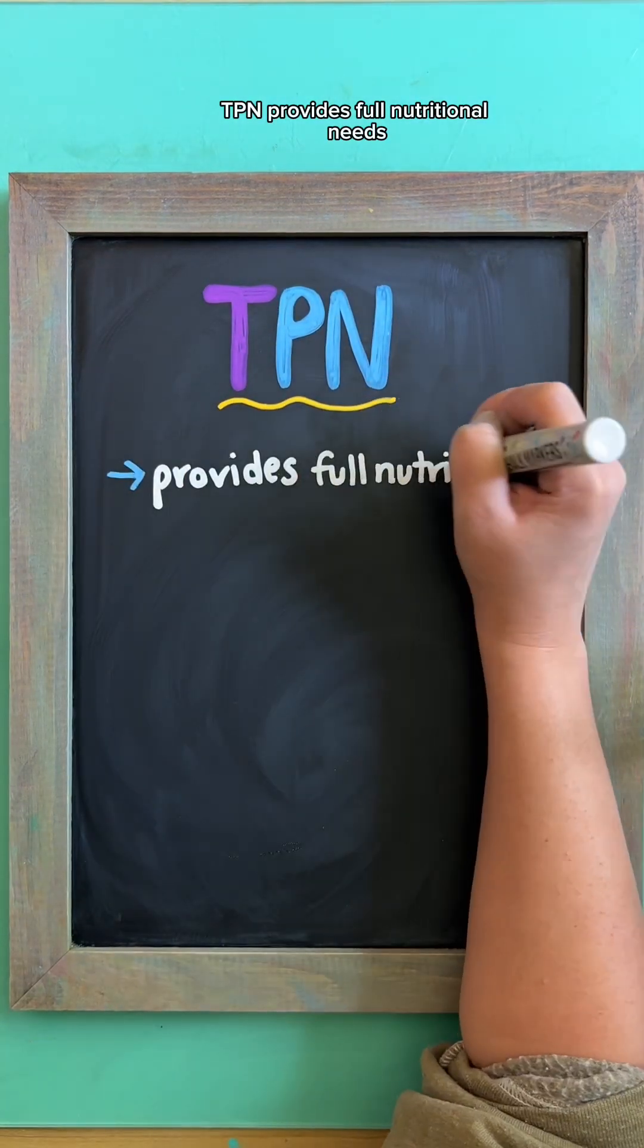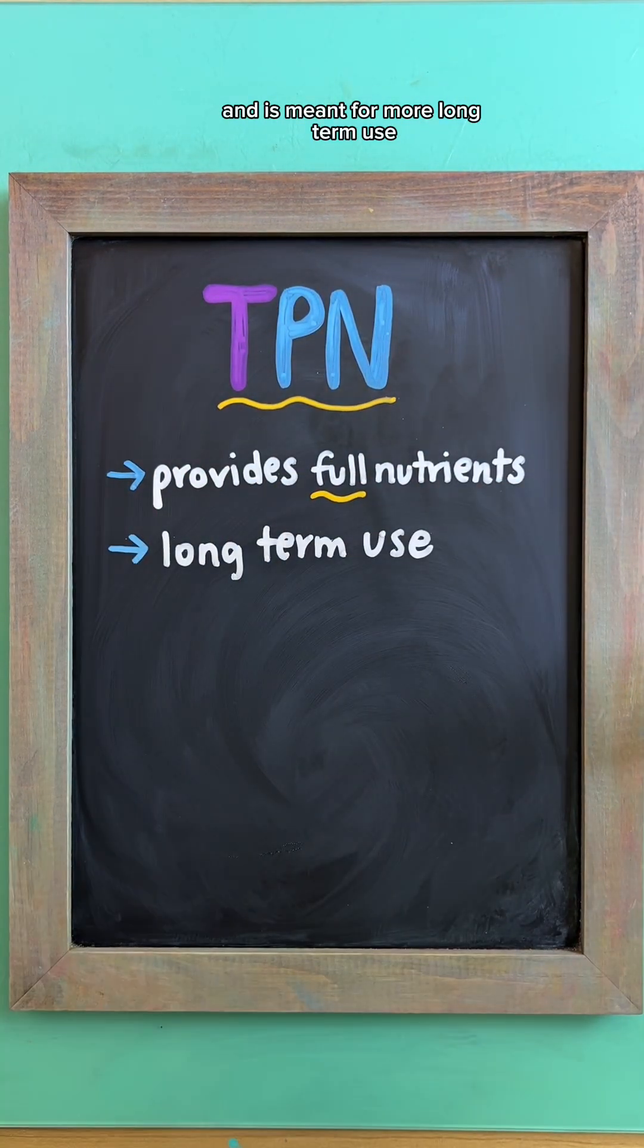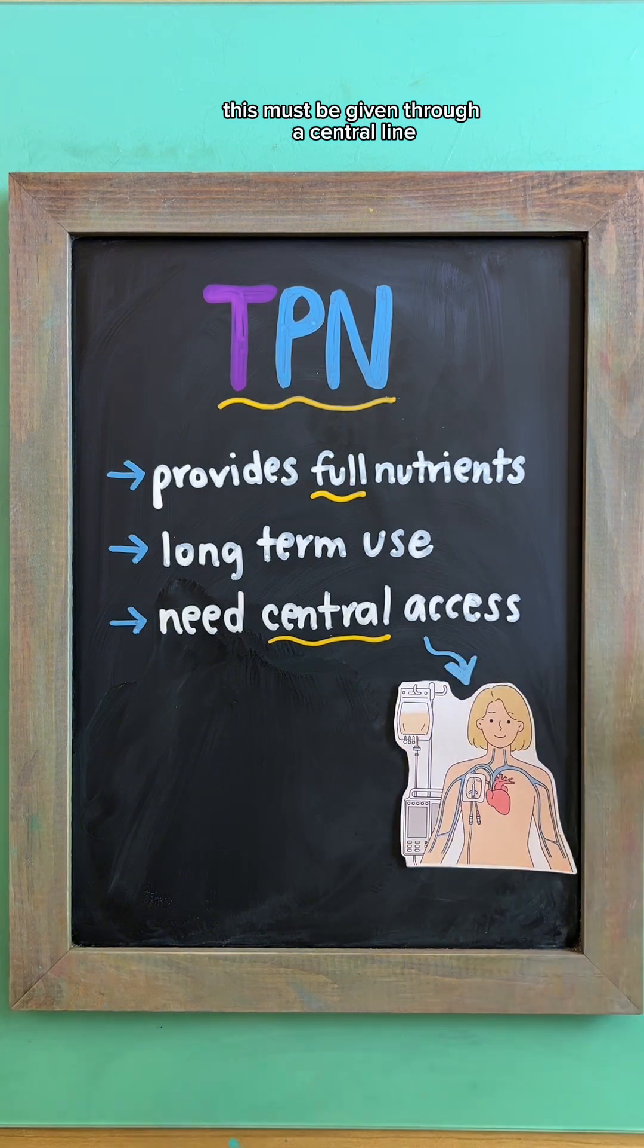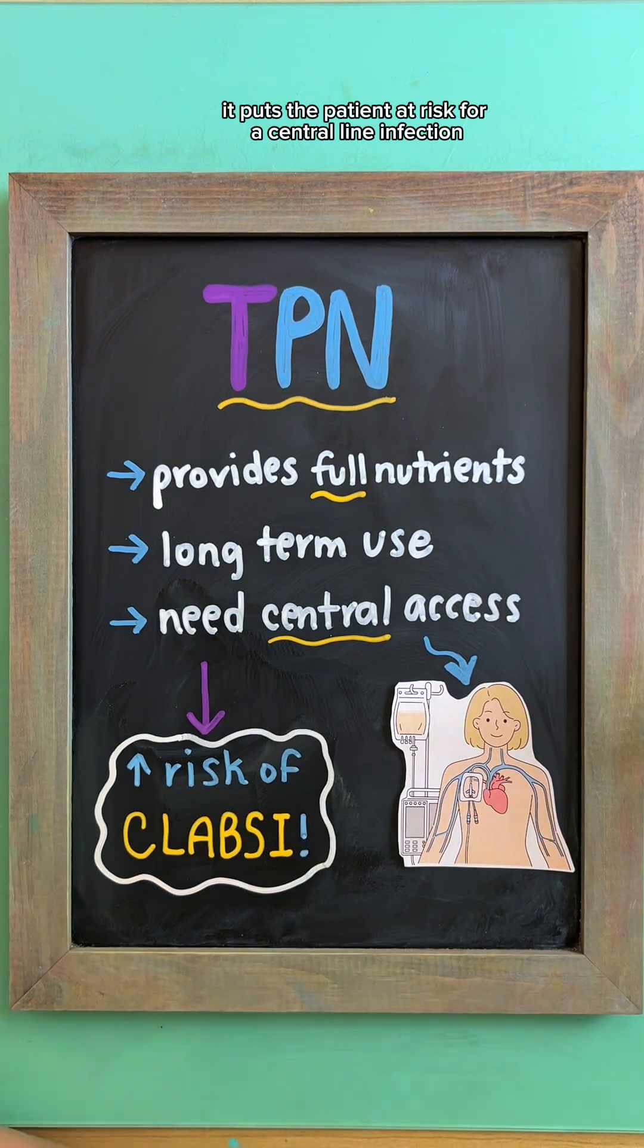TPN provides full nutritional needs and is meant for more long-term use. This must be given through a central line, and the risk with this is it puts the patient at risk for a central line infection.